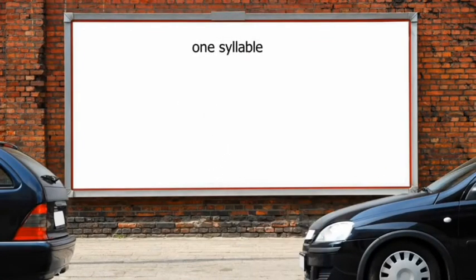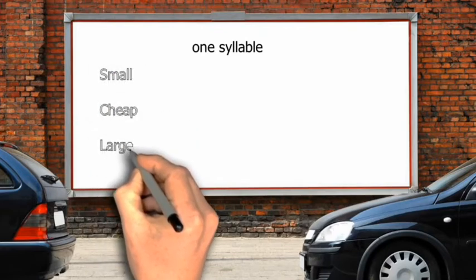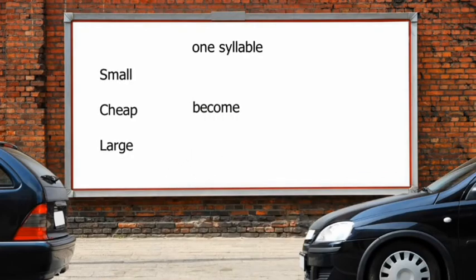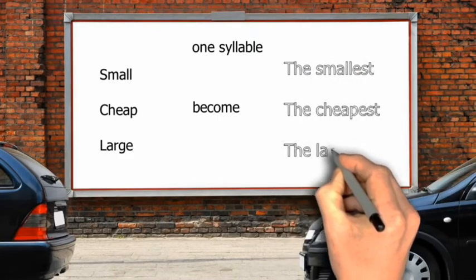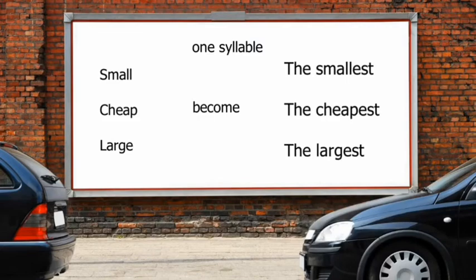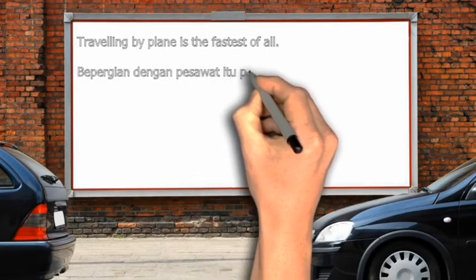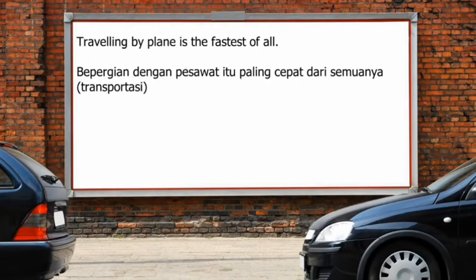If you use a one-syllable adjective — jika anda menggunakan one syllable dari kata sifat — for example: small, cheap, large. So you can say 'the smallest', 'the cheapest', 'the largest', using -est because they are one syllable.